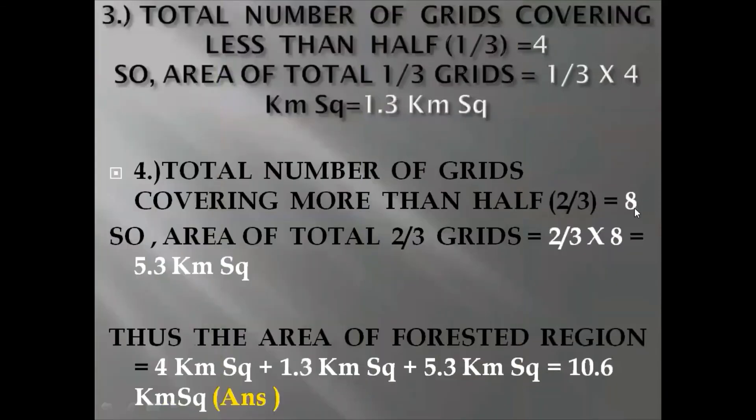So I have written it here and then I have calculated the area that is 2 by 3 into 8 is equal to 5.3 kilometer square.